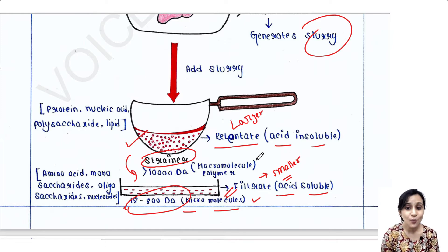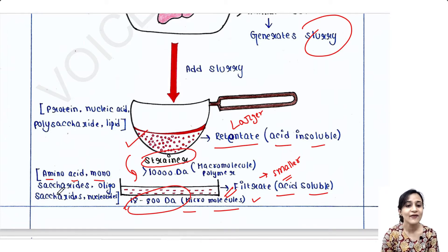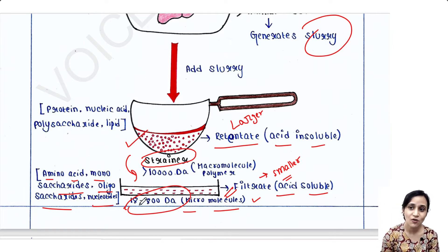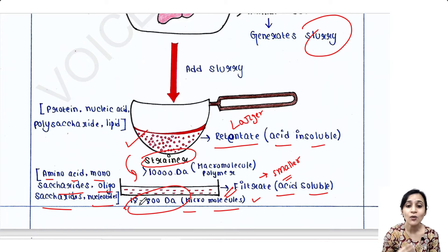Among those micromolecules you will get monomers or oligomers — like single amino acids, monosaccharides like glucose, and oligosaccharides, which are oligomers made up of very few monosaccharide units. You will also get nucleotides, which are the basic units of DNA and RNA. These are all very small molecules with low molecular weight, and they are dissolved in the acid — they are in the filtrate.